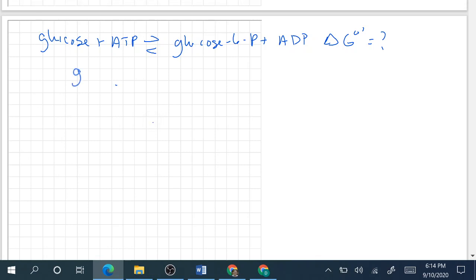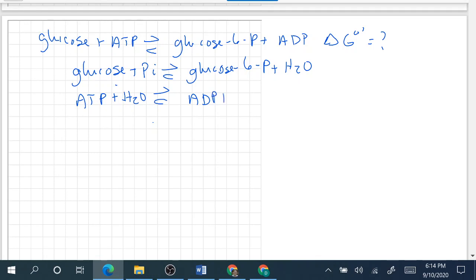We can say that glucose plus inorganic phosphate yields glucose 6-phosphate plus water. We can say that ATP plus water yields ADP plus inorganic phosphate. The delta G naught prime for this second reaction, if we look up in a table, is negative 30.5 kilojoules per mole.